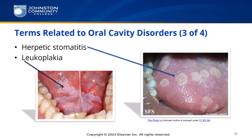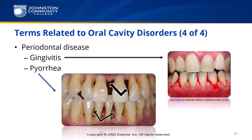Leukoplakia is a condition of white patches on the lips or buccal mucosa, often associated with tobacco use and potentially precancerous. Periodontal disease is disease of the tissue surrounding the teeth, and can include gingivitis and pyorrhea. Gingivitis — gingivo means gums, -itis means inflammation — is inflammation of the gums. Pyorrhea — pio means pus, -rrhea means flow or discharge — is the discharge of pus from the tissue surrounding the teeth when infected.